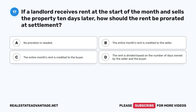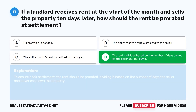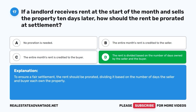Question 17. If a landlord receives rent at the start of the month and sells the property 10 days later, how should the rent be prorated at settlement? A. No proration is needed. B. The entire month's rent is credited to the seller. C. The entire month's rent is credited to the buyer. D. The rent is divided based on the number of days owned by the seller and the buyer. The correct answer is D. To ensure a fair settlement, the rent should be prorated — divided based on the number of days the seller and buyer each own the property.